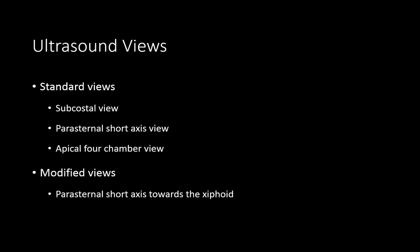Therefore, ultrasound has become an emerging modality to assess the umbilical venous catheter tip. To perform this assessment, standard views are needed: the subcostal view, the parasternal short axis view, and sometimes the apical four-chamber view or a modified parasternal short axis view for deeper catheter positions.